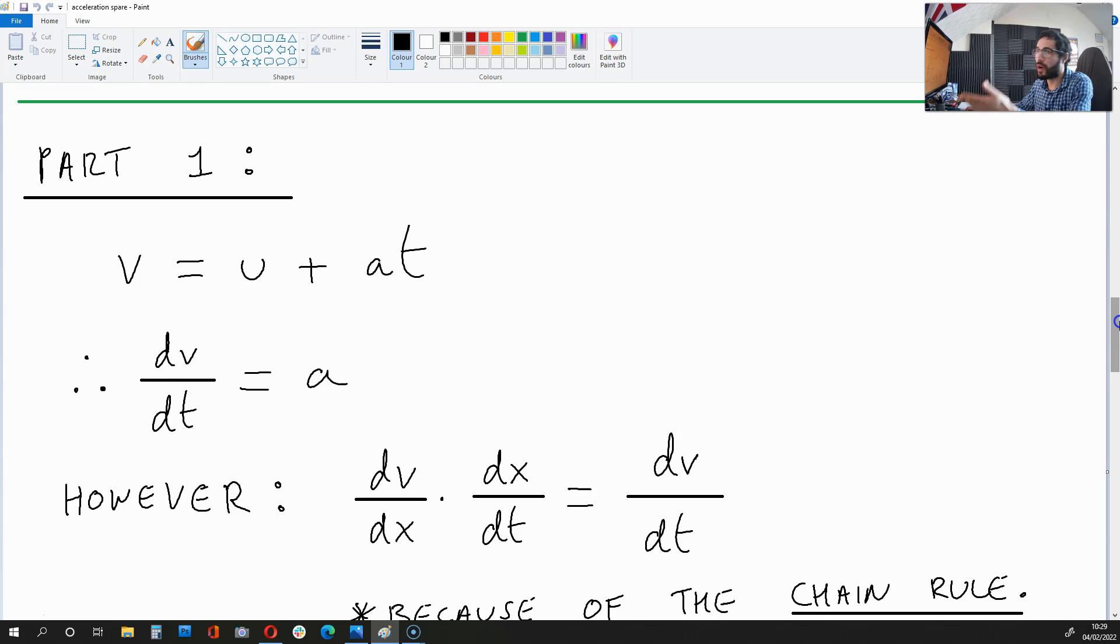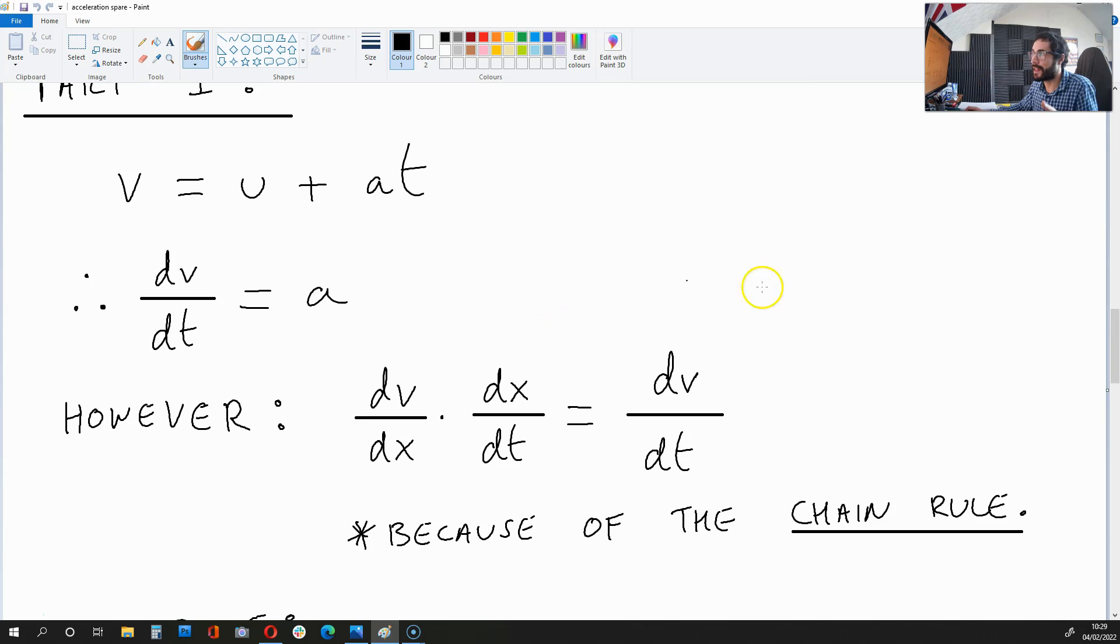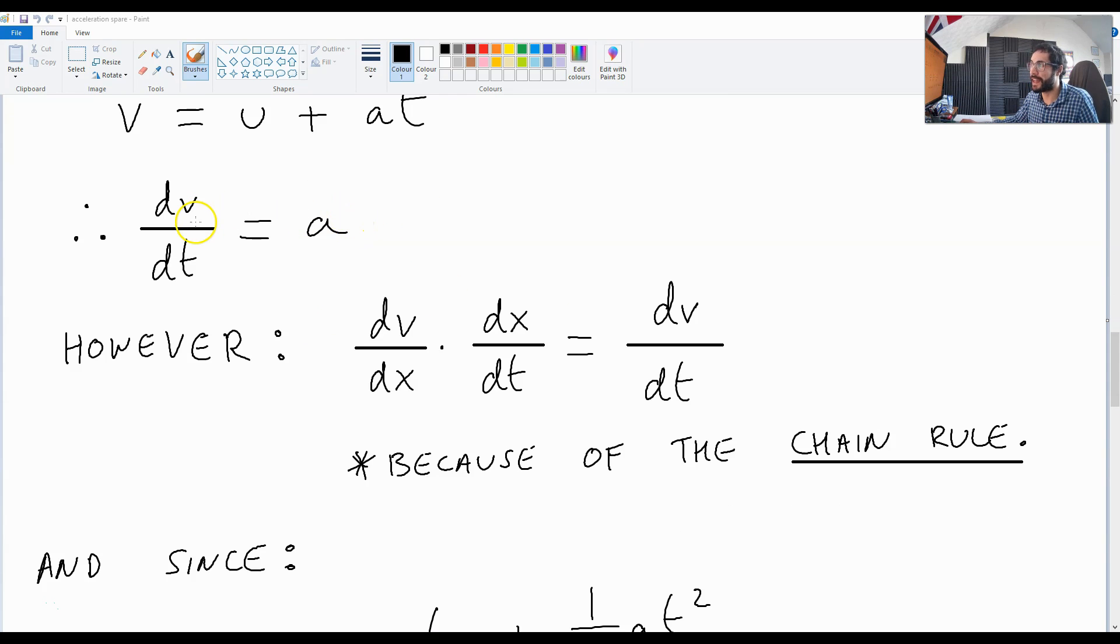So let's move to part one of this proof. V is equal to u plus at. This is going to mean that dv over dt is equal to a, as we're differentiating. So we know that a is dv over dt.